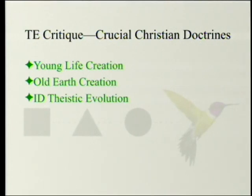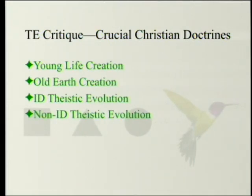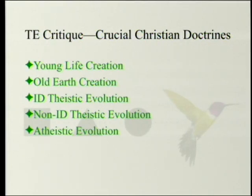Then there is intelligent design-friendly theistic evolution — God did it in a slow way, but he interfered in ways that you can tell. Then there is what you could call intelligent design antagonistic, or non-intelligent design, theistic evolution, which is that God did it, but he did it in such a way that you can't tell that he did it. And finally, there is atheistic evolution — you can't tell because God didn't actually do it, because God does not exist or does not interfere with the world at all.